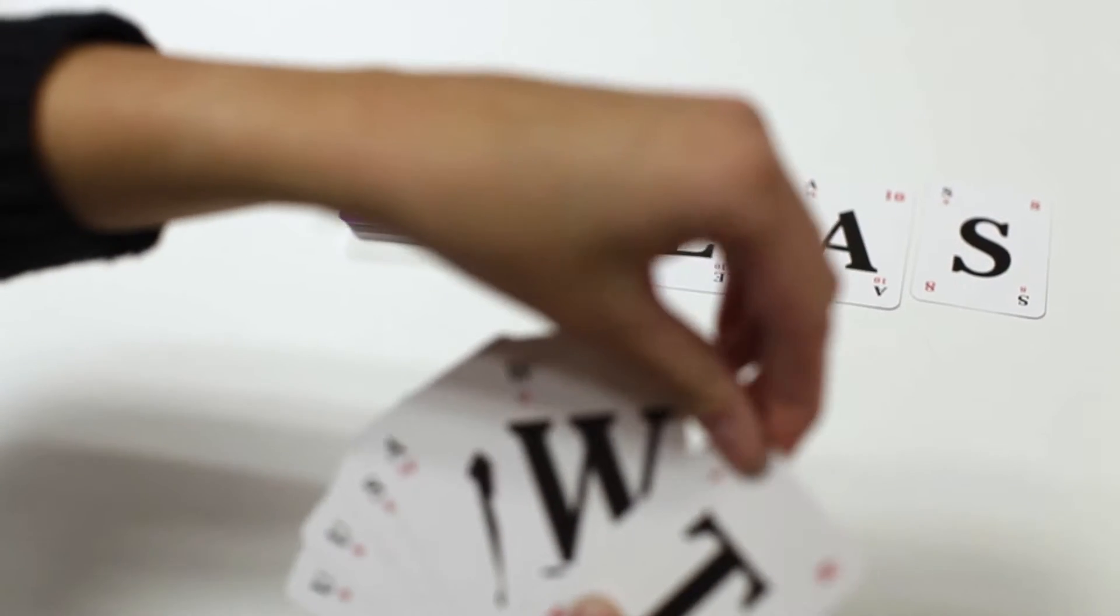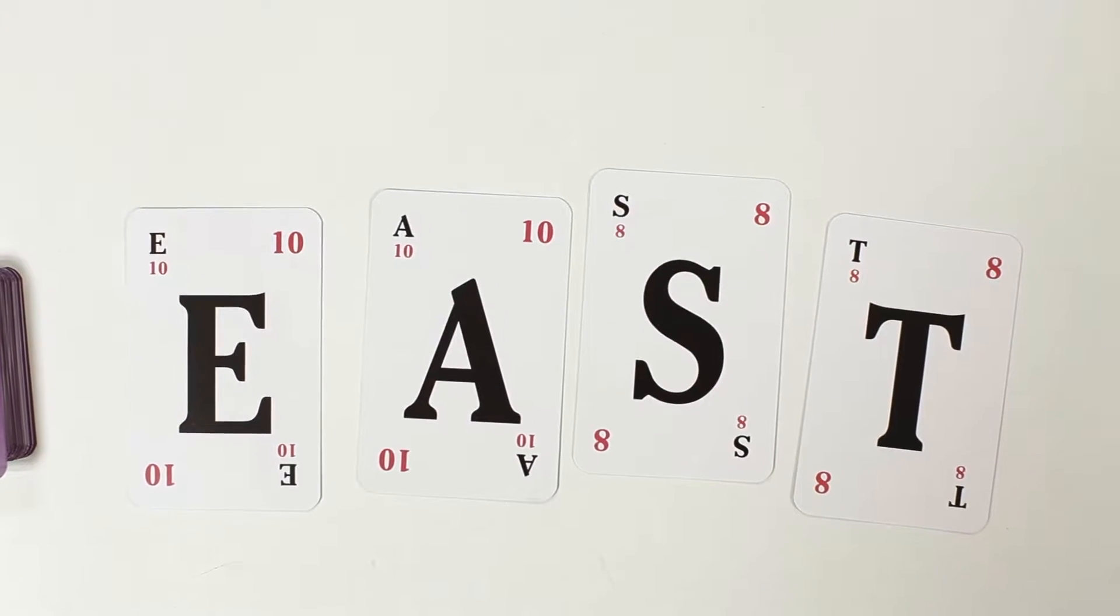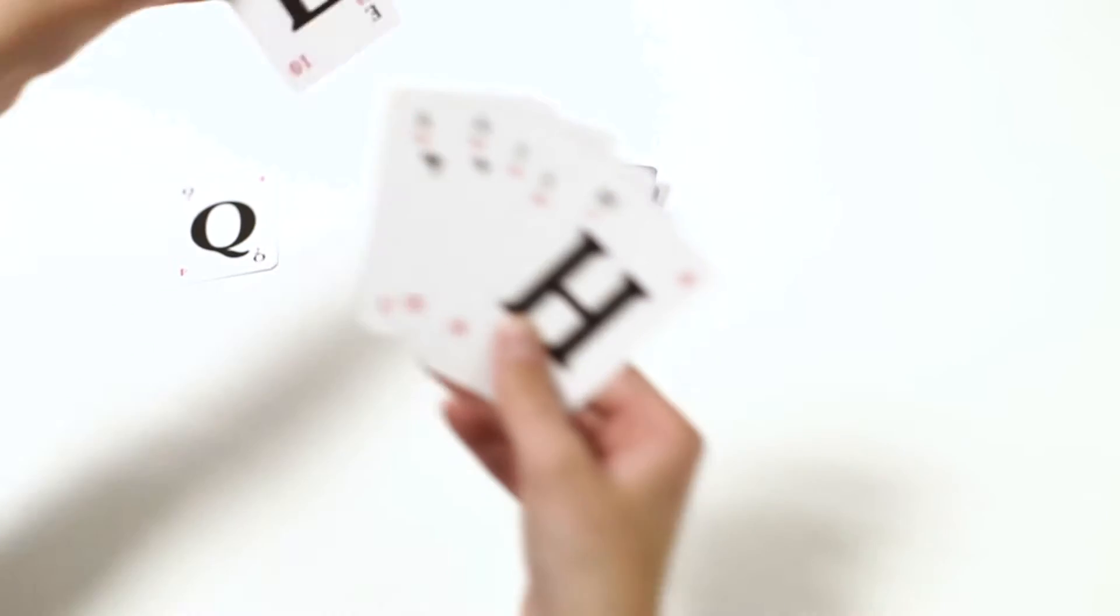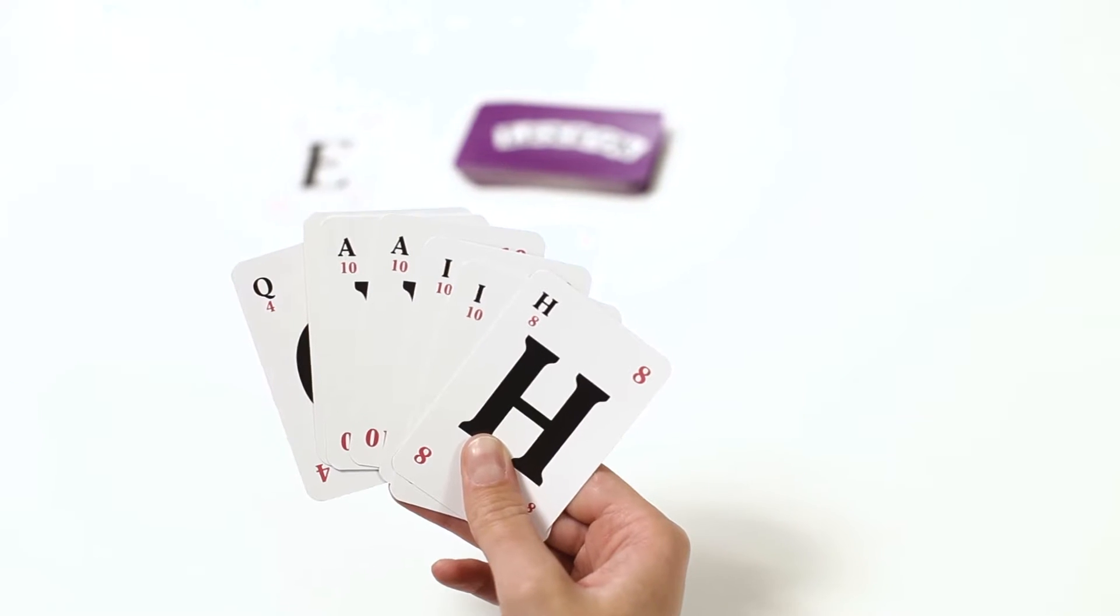Each player looks at their hand and must choose four options. Number one, form one complete word and place it face down on the table. Discard one of their cards and take either the face up card from the table or the face down from the pile.